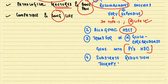Additional treatments include transfer of normal glucocerebrosidase-producing genes into the patient's hematopoietic stem cells, and substrate reduction therapy to decrease glucocerebroside intake. With this we have completed Gaucher's disease — the most common lysosomal storage disease and definitely an exam question. Thank you, and please share and subscribe.